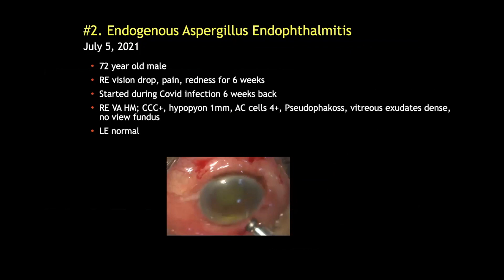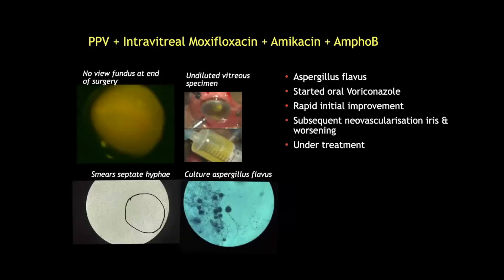He was placed on oral voriconazole and ciprofloxacin with complete resolution at six weeks. Our second endogenous endophthalmitis was a 72-year-old male referred in July this year with features of endophthalmitis for six weeks that started during his COVID infection. He underwent vitrectomy with intravitreal antimicrobial agents and vitreous microbiology was positive for Aspergillus flavus. He was placed on oral voriconazole with rapid initial improvement but subsequent worsening and is still under treatment.